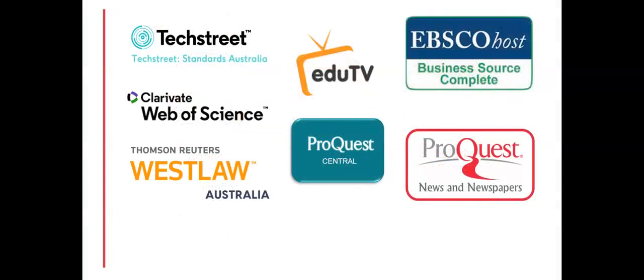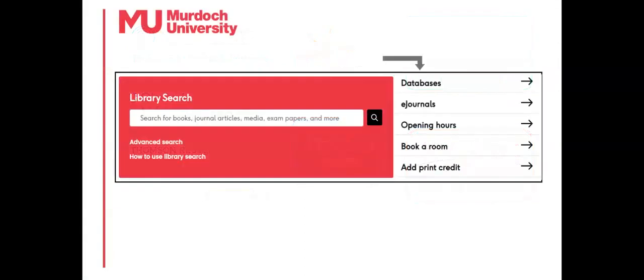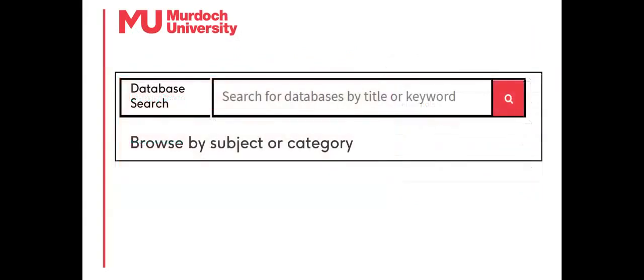Databases allow for more specific searching for articles. Different databases have different subject specialisations, hence the need to search relevant databases. On the Murdoch University Libraries databases page, specific databases can be searched for by title, or selected from the Browse by Subject or Category lists.